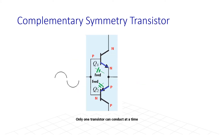Before we start, let's try to understand what complementary symmetry transistors are. These are two transistors — one is NPN and the other is PNP — and they are joined together in a manner such that the emitters and the bases are connected.